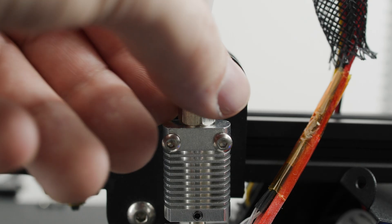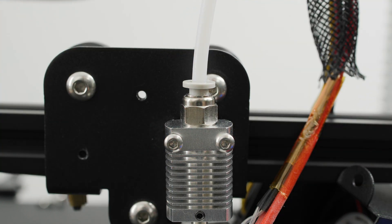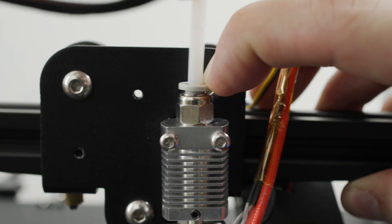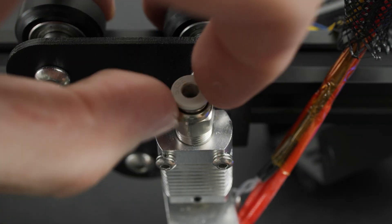Then pull the PTFE tube out of the hotend. To release the tube, the connector lock must be removed and pressure applied to the connector. Finally, unscrew this connector as well.